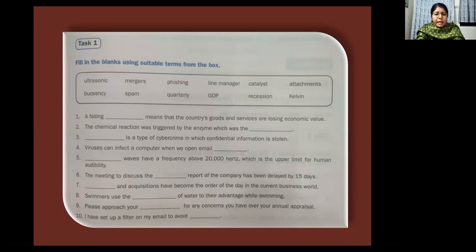Next, the chemical reaction was triggered by the enzyme which was the catalyst. Dash is a type of cybercrime in which confidential information is stolen. Phishing. Next, viruses can infect a computer when we open email attachments.